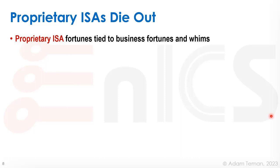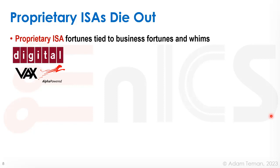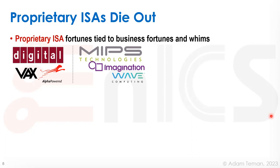Another huge problem with proprietary ISAs is that they tend to die out. The fortunes of proprietary ISAs are tied to the business fortunes and whims of the companies that develop them. Take Digital Equipment Corporation — they developed the PDP, then moved to the VAX, then to the Alpha ISA, which developed many concepts we still use today. Basically, with the end of Digital, all of that is gone. MIPS was probably the first commercial RISC ISA that really took off, but was eventually bought by Imagination and then by Wave Computing.